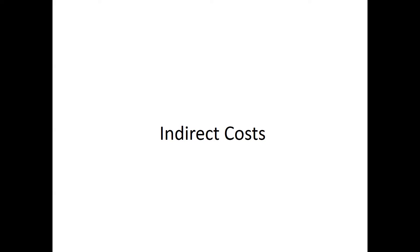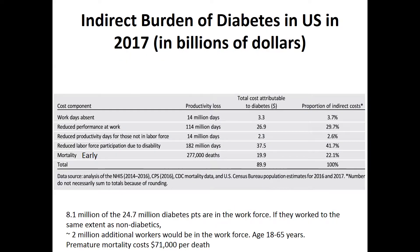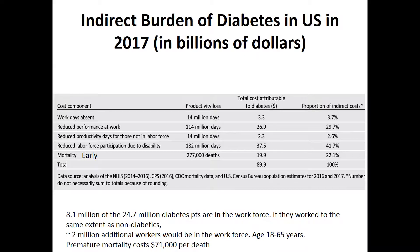What are indirect costs? Indirect costs account for $90 billion of the total. These include: absenteeism, which is a low contributor; reduced performance at work — people show up but don't work effectively; decreased productivity for those not in the labor force at 2%; reduced labor force participation due to disability at about 42%; and early mortality, with 277,000 deaths annually in 2017 accounting for 22% of indirect costs, totaling roughly $90 billion.